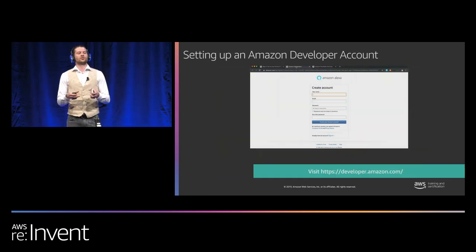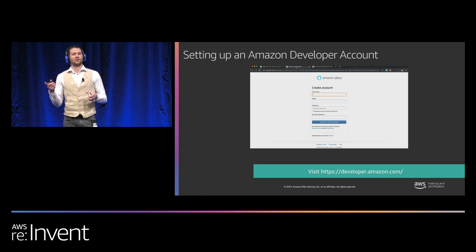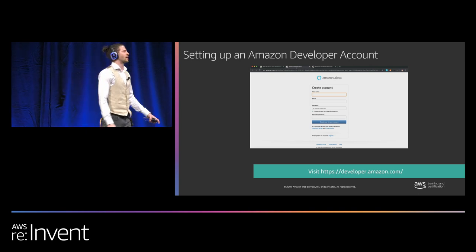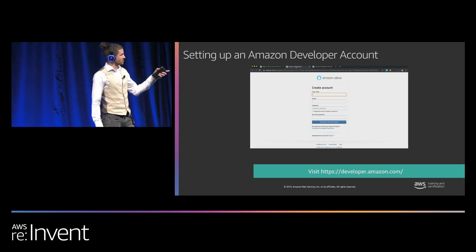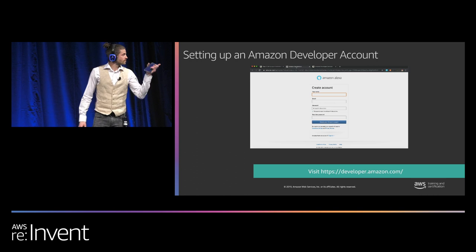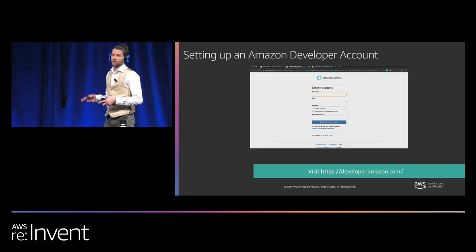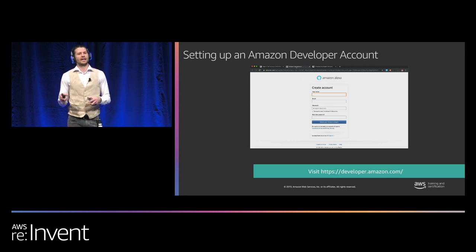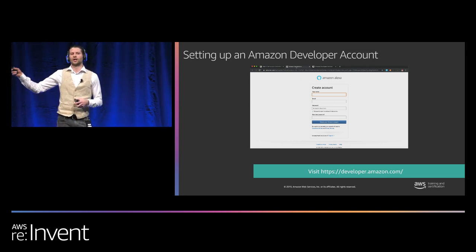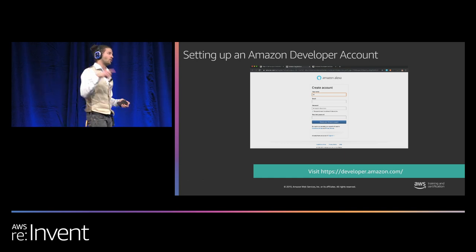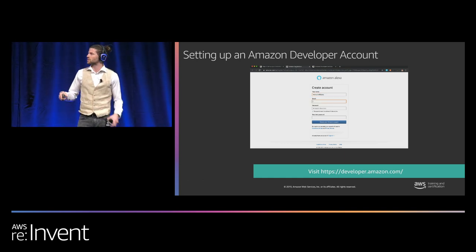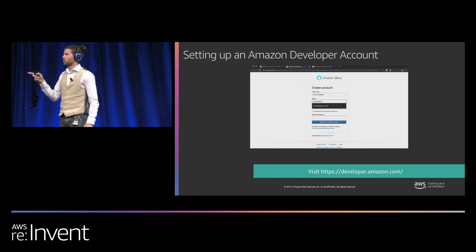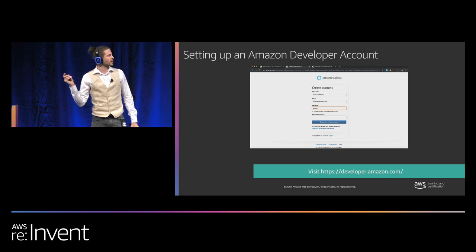We've connected our two boards. Now we start setting up the development machine, first by setting up an Amazon developer account. This developer account is used to register our ACK devices. As Mohamed pointed out, in the Alexa Connect Kit console, all registered modules and products are tied to an Amazon developer account.